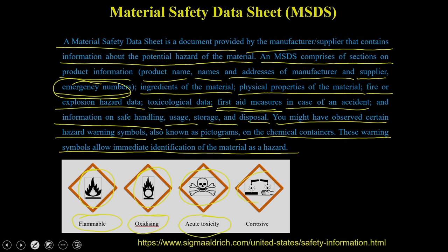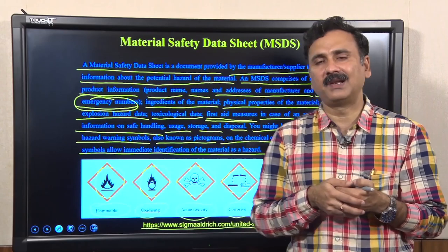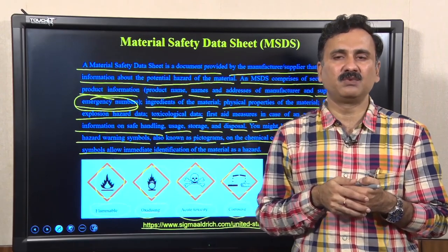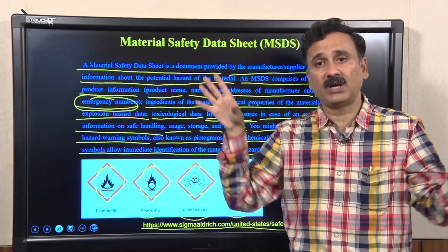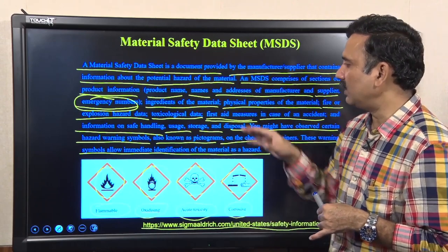Then there is a symbol indicating the chemical is corrosive in nature, meaning it could be a strong acid or strong base. You can follow Sigma-Aldrich catalogs — a link is provided that will take you to the Sigma-Aldrich website to show you what a prototype MSDS document looks like and contains all this information.